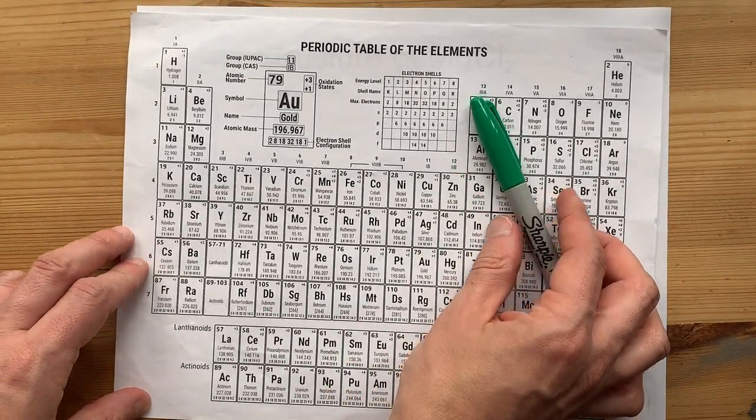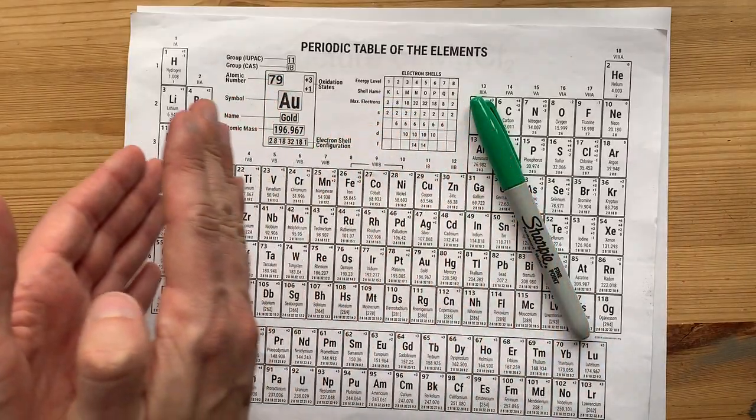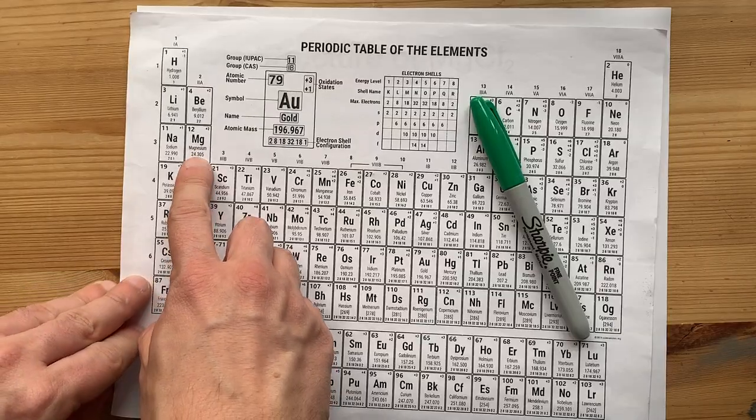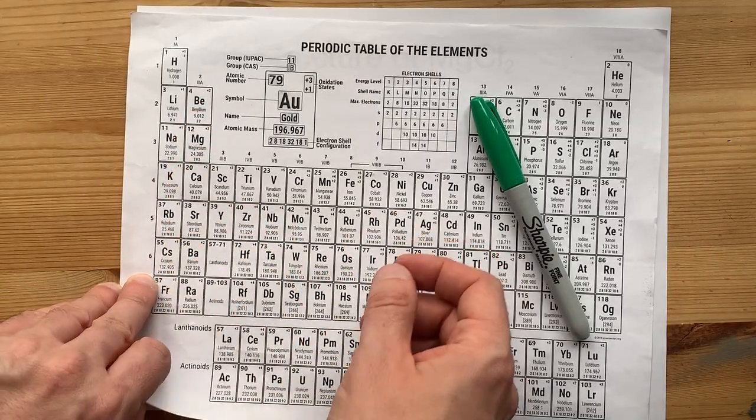Now, anything to the left of this staircase on the periodic table is usually a metal. Hydrogen is the exception, but magnesium is definitely an alkaline earth metal.